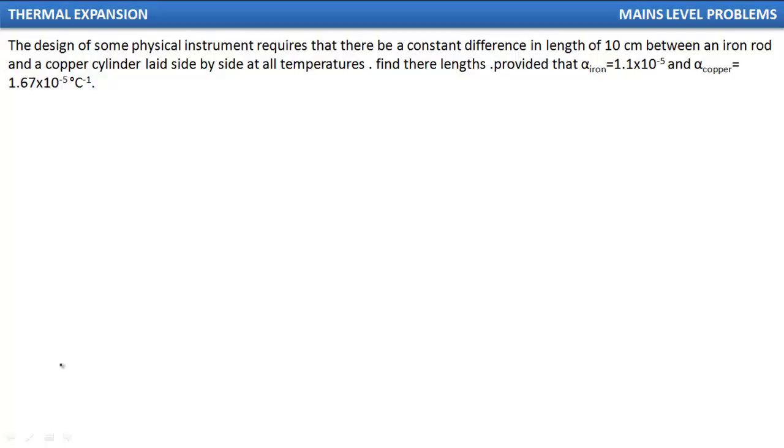The design of some physical instrument requires that there be a constant difference in length of 10 cm between an iron rod and a copper cylinder laid side by side at all temperatures. Find their length provided that alpha iron is 1.1 × 10^-5 and alpha copper is 1.67 × 10^-5 units.